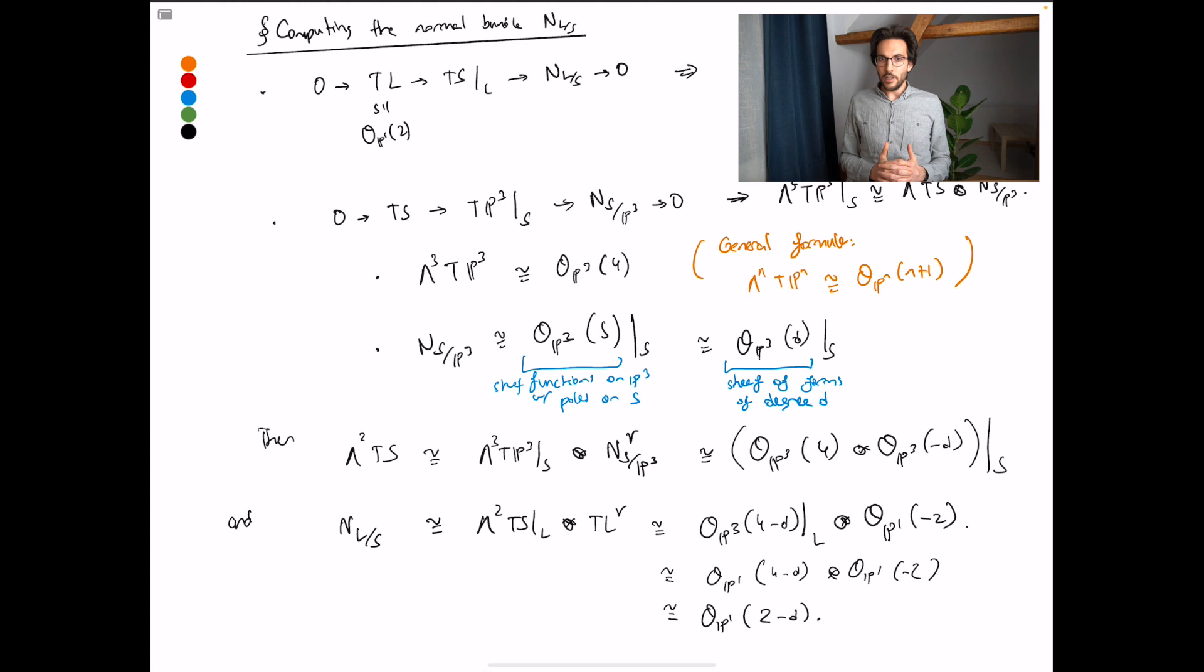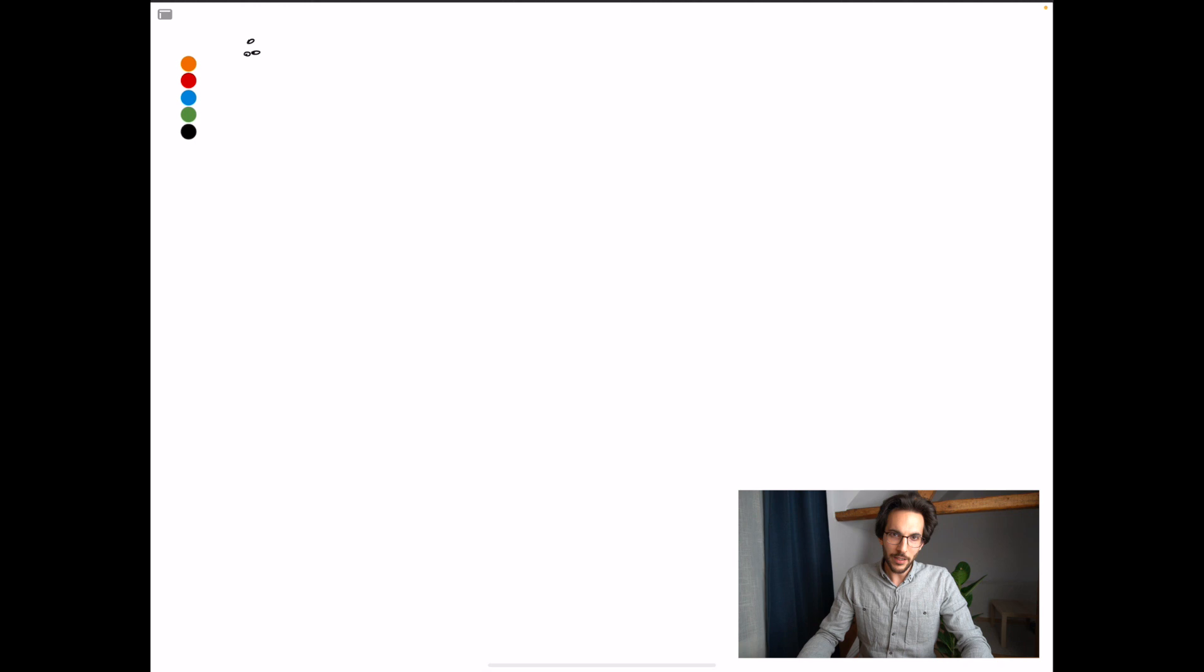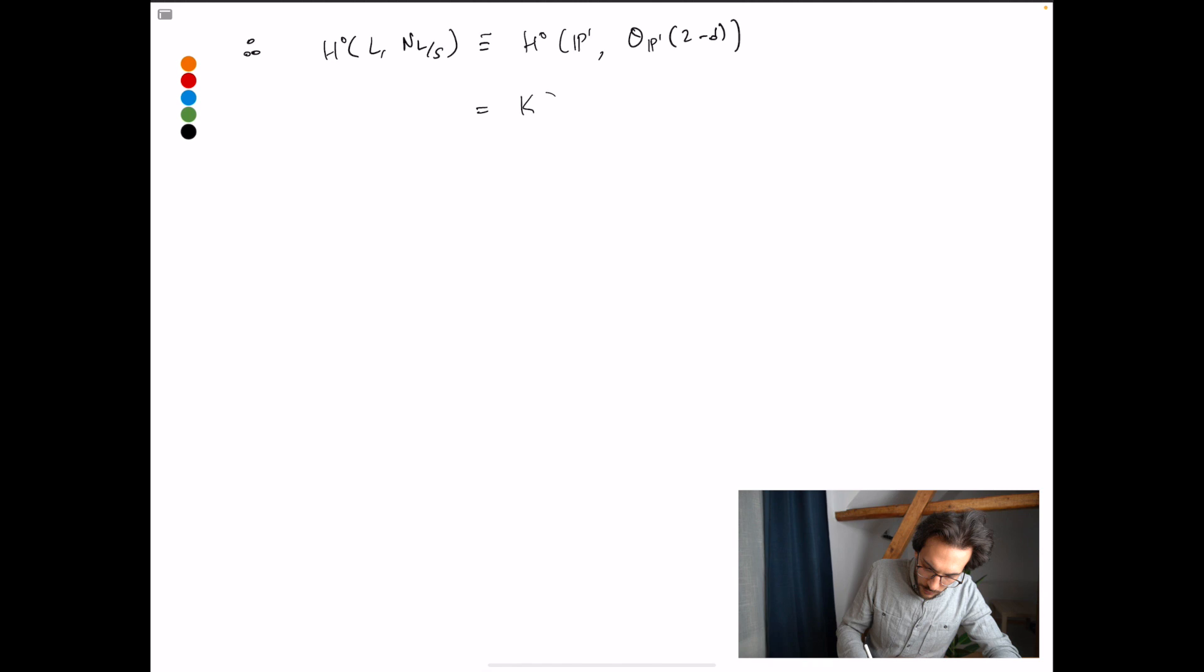Therefore it will not have sections if the degree is greater than 2. So we can summarize these results because here we also see what's going to happen when D equals 1 or 2. So we were interested in the global sections of the normal bundle of L inside of S. So that's this space. And we just represented these things in terms of more familiar objects. We said that this was—I first identified L with P1. And then the normal bundle was OP1,2 minus D. And this is just the global sections are just the homogeneous forms in two variables, the two coordinate functions of P1, of degree 2 minus D.